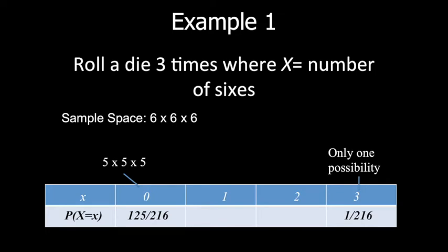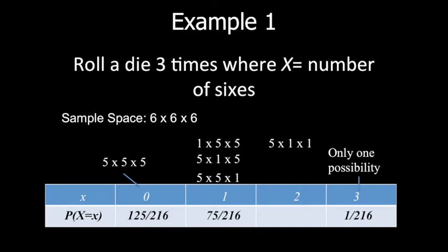For getting one six: the six can appear on the first, second, or third roll. Summing these combinations gives P(X=1) = 75/216. For getting two sixes: we can have the six in rolls 1 and 2, rolls 1 and 3, or rolls 2 and 3 — giving 5 + 5 + 5 — so P(X=2) = 15/216. The total of all probabilities must equal 1, confirming this is a valid discrete probability distribution.